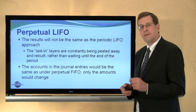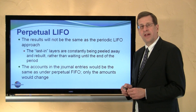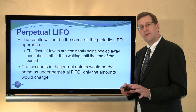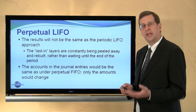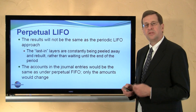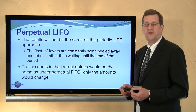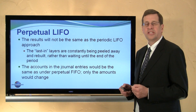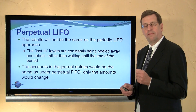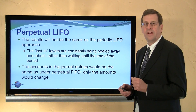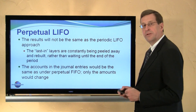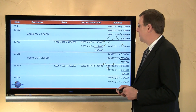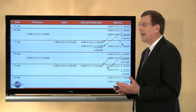The inventory account in the ledger moves constantly with each purchase and sale transaction, the same as under the FIFO method. If you need to review the accounts and the way they function, the previous video module covers the perpetual FIFO method and shows you the accounts involved — the same accounts apply under LIFO. Now let's look at an example.